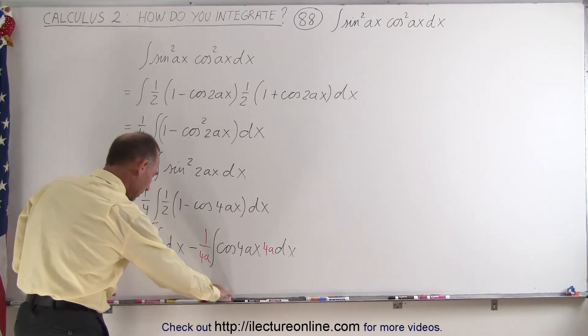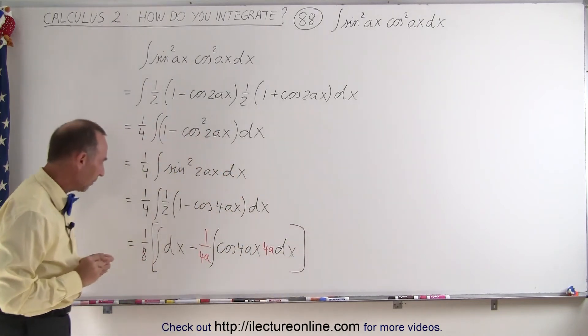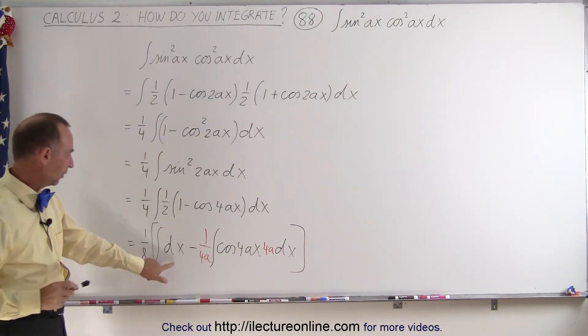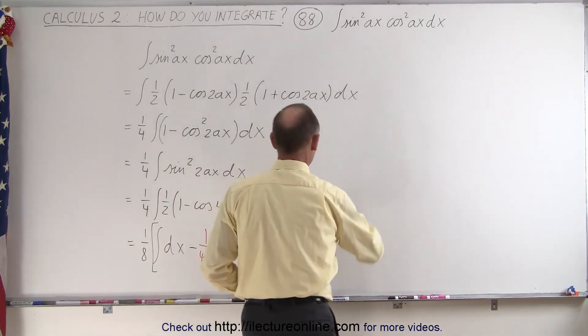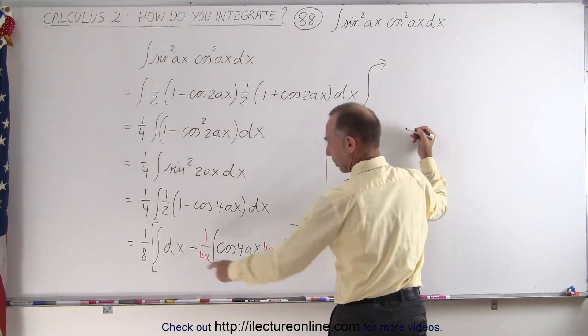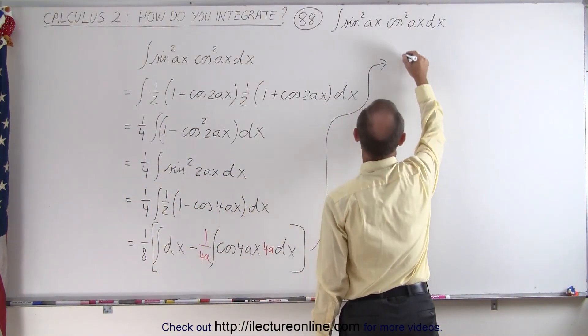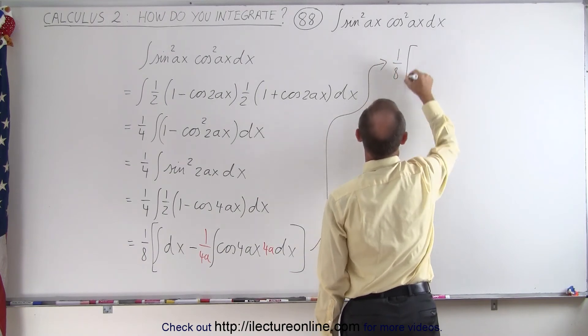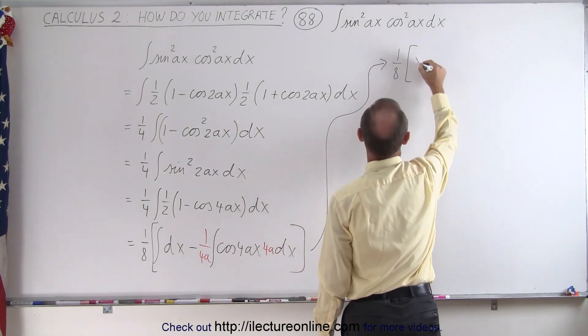And now, we close the brackets, and we're ready to integrate. Our first integral, of course, is pretty easy. So this goes over here, when we integrate that, we simply have 1 eighth times the integral of dx is going to be x.